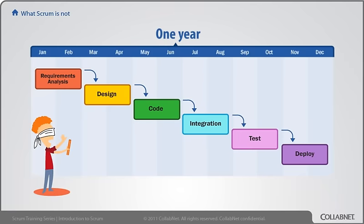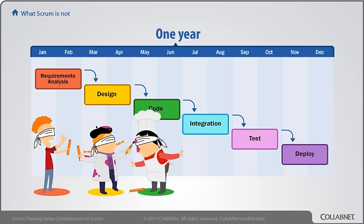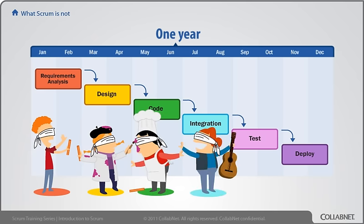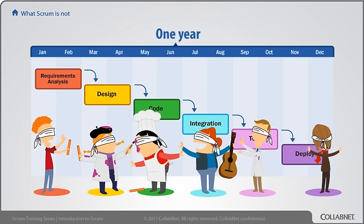The reason it fails for complex work: we rarely have perfect knowledge at the beginning. In fact, we know less about our project when we're starting out than we'll ever know in the future. Today is the dumbest day of the rest of our project. But a plan-driven approach requires us to make our most important decisions right at the beginning, when we know the least. Waterfall projects eventually descend into anarchy, with low quality and too much overtime.